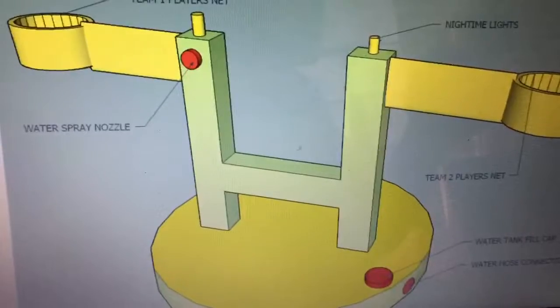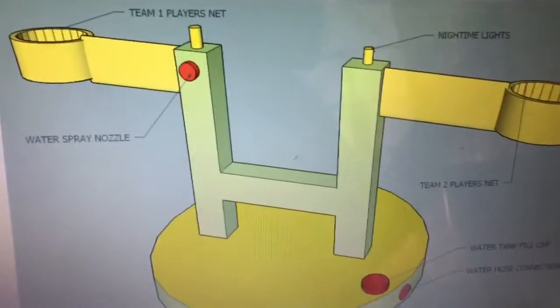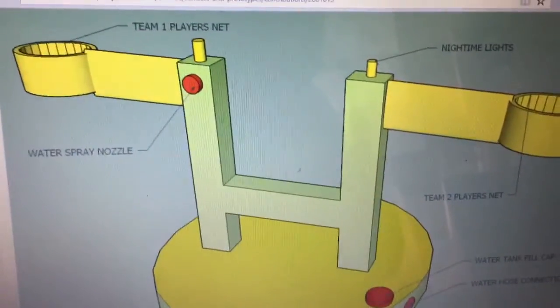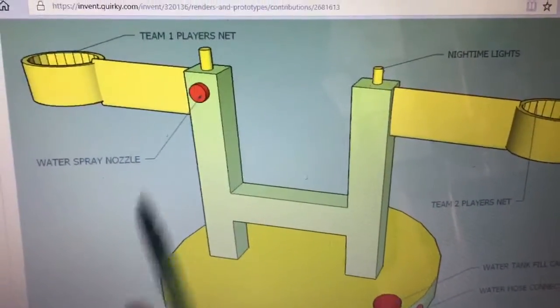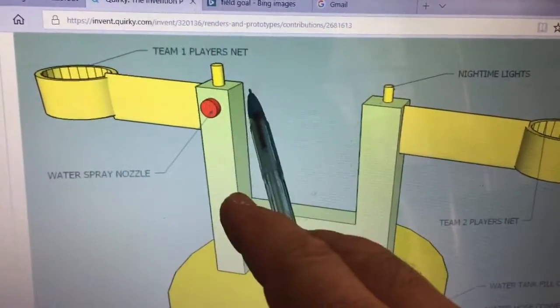Each team is given football-shaped sandbags or beanbags, whatever you prefer. Team A will stand on this side in front of their water nozzle. Team B will stand on the other side in front of the other water nozzle.